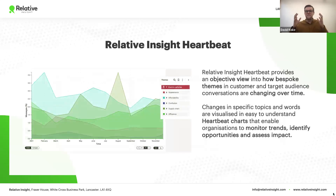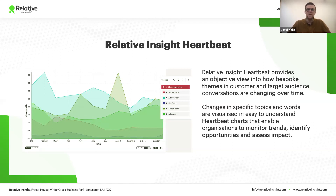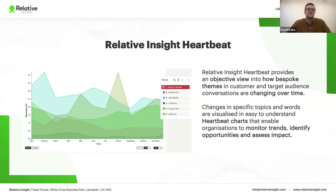Heartbeat is a time-based visualization tool for monitoring the things that you care about most in topical online conversations and customer feedback. It provides you an objective view into how bespoke, user-defined themes are changing over time. These changes are visualized in Heartbeat charts — easy-to-understand graphs that help you monitor trends, identify opportunities, and assess the impact of initiatives without having to read through all of that data.